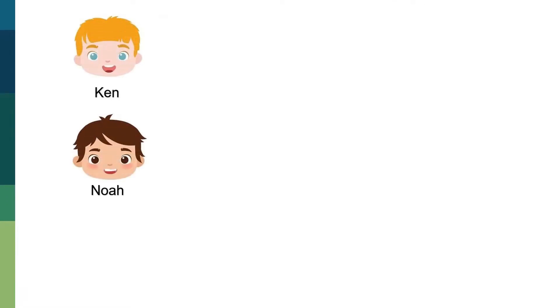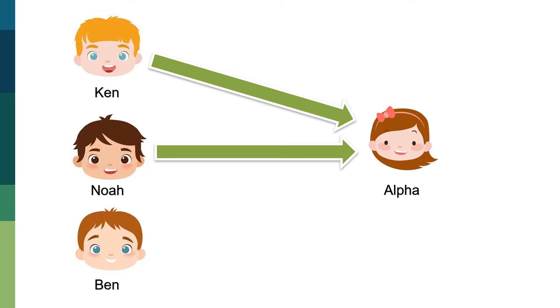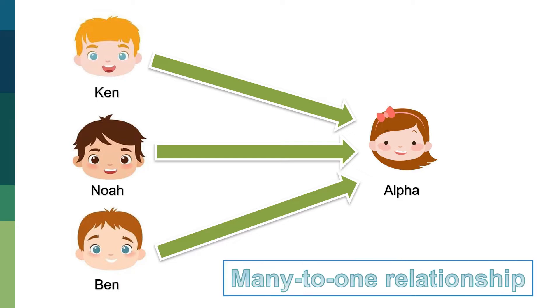Ken, Noah, and Ben are very competitive and they like the same girl, which is Alpha. So they decided to ask her out and agreed that whoever she picks, the other two will accept the defeat. This one is an example of many-to-one relationship.